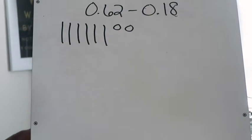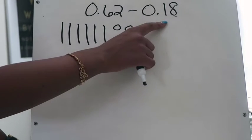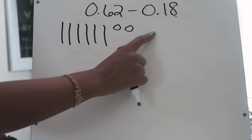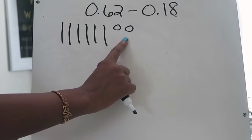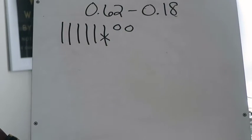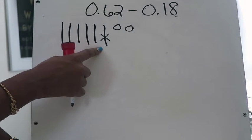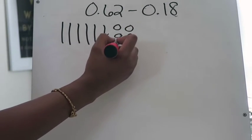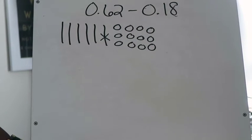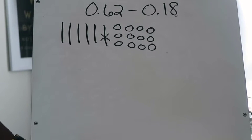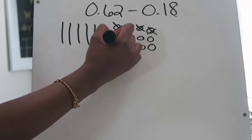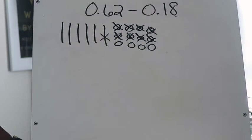I'm now going to subtract eighteen hundredths. Starting with the furthest place value on the right, which is the eight in the hundredths place, I need to subtract eight hundredths. I only have two, so I'm going to regroup one of my tenths — converting it into ten hundredths — drawing one through ten. Now I can go ahead and take away eight hundredths, crossing out one, two, three, four, five, six, seven, eight. Done with my hundredths.